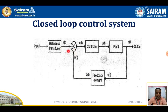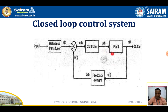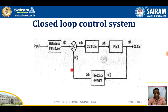Once any value changes, the feedback element starts to work: it compares the output value to the reference value and provides the error signal. According to the error signal, the reference transducer produces the required input. Here, r(t) is the reference input, u(t) is the actuating value, c(t) is the controlled output, b(t) is the feedback signal, and e(t) is the error signal. After comparing, the error signal is provided and finally the required output is obtained.